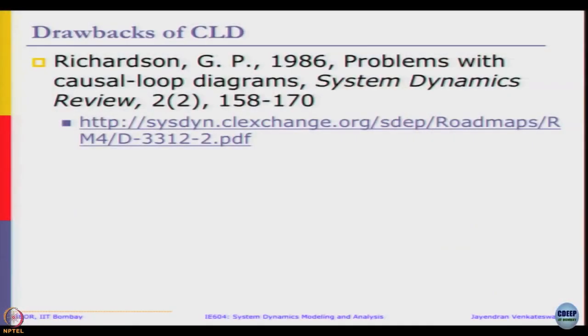It is not that causal loop diagrams are without drawbacks — there are some, and they have been pointed out many times. They tend to make us a little more relaxed about whether we have a complete set, and in some scenarios the model itself can become pretty complicated in a short time. More such points are available in the reference link, which we can go ahead and explore to see which scenarios are appropriate for applying causal loop diagrams.